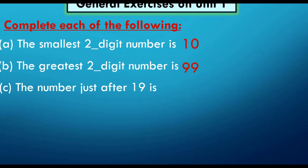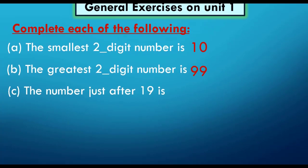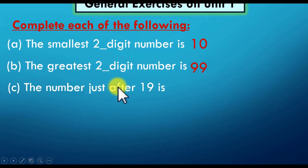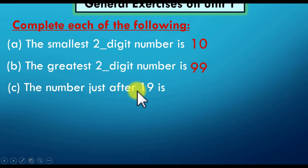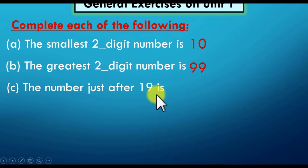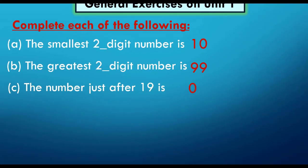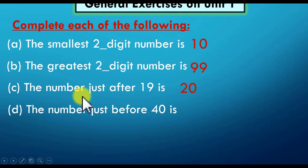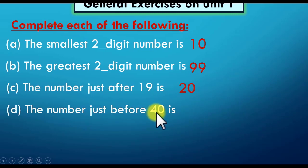The number just after nineteen is? Note that 'just after' means التالي مباشرة — the number that comes right after. The number right after 19 is 20. And 'just before' means السابق مباشرة — the one right before. Who comes just before forty? Thirty-nine.